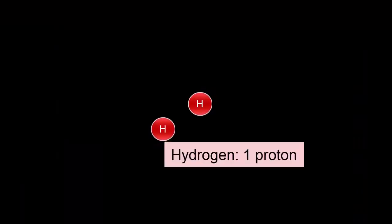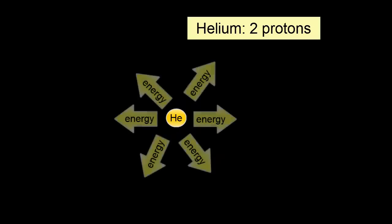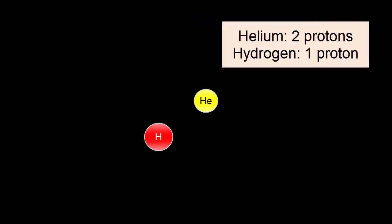Let's return to the nuclear fusion going on inside a star's core. At first, the major fuel is hydrogen, which fuses to become helium. But if the star is large enough and hot enough, eventually the hydrogen and helium fuse to produce lithium, three protons in the nucleus.